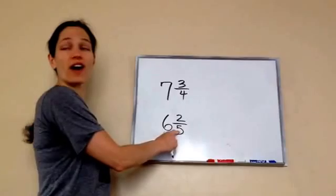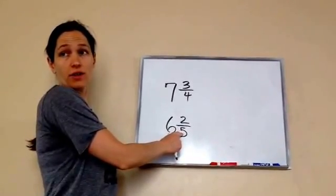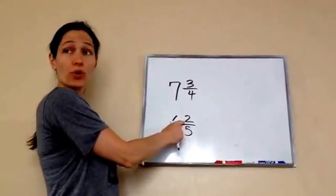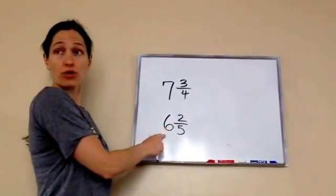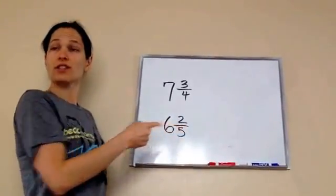Look at this one. What's half of five? Two and a half. Is two smaller or bigger than two and a half? Smaller. So is it going to be closer to six or seven? Six. You get how you do it.